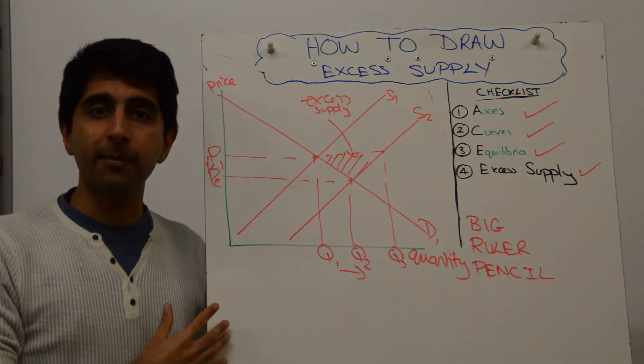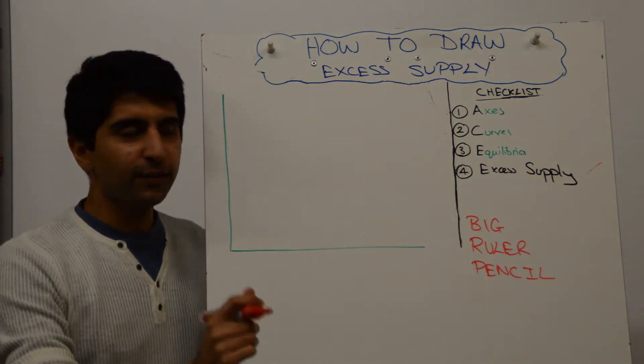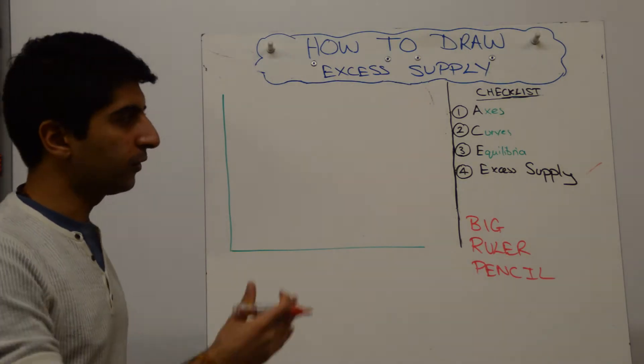How else could we show it? Well, we could shift demand to the left. Let's do that now. Okay, so by shifting demand to the left, we can also show an excess supply.